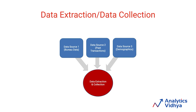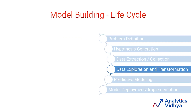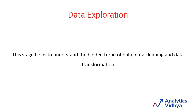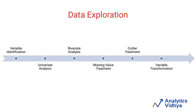Next is a very important step: data exploration and transformation. This stage includes understanding the data, testing the hypotheses we created during hypothesis generation, and finally transforming appropriately to use an algorithm. It involves variable identification to identify the types of variables present, then univariate analysis taking one variable at a time, bivariate analysis looking at relationships between combinations of variables, missing value treatment, outlier treatment, and variable transformations to get the dataset ready for a machine learning algorithm.